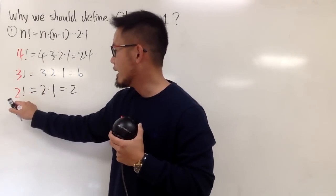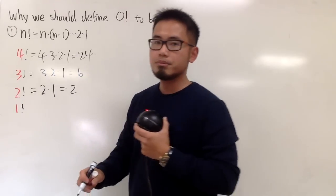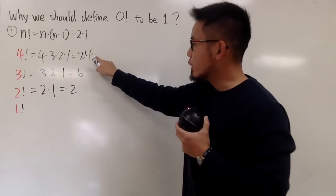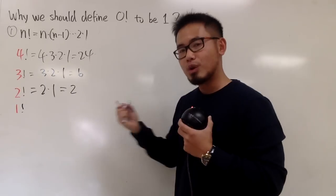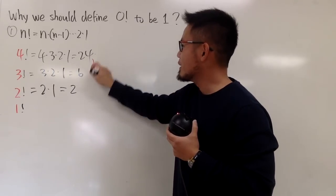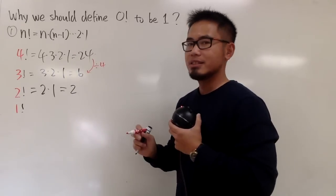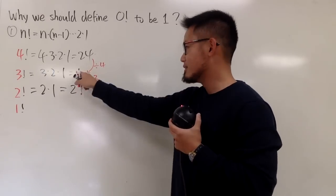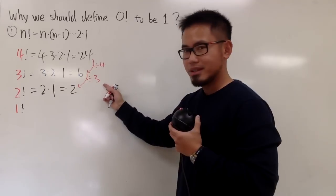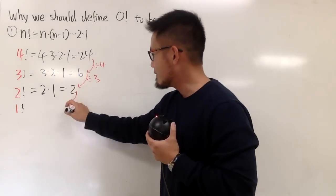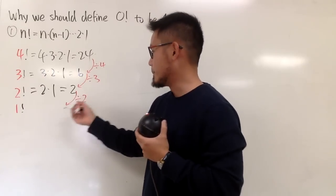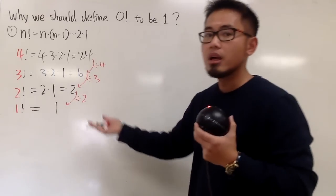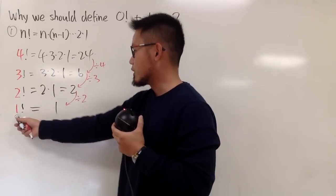The next number is 1. Just paying attention to the results: from 24 to 6, we divide by 4; from 6 to 2, we divide by 3. So from 4, 3, the next divisor should be 2. We have 2 divided by 2, which equals 1. The left-hand side and right-hand side follow the same pattern, and 1 factorial equals 1.